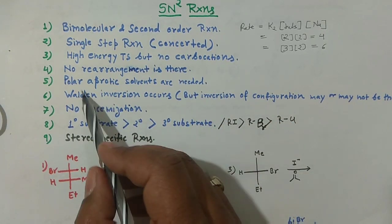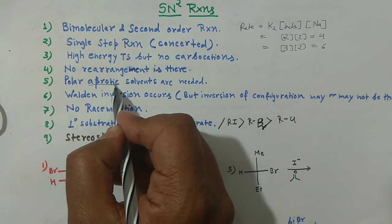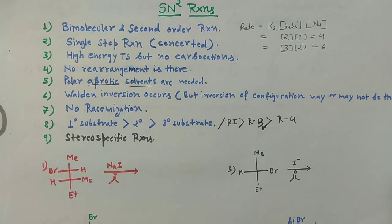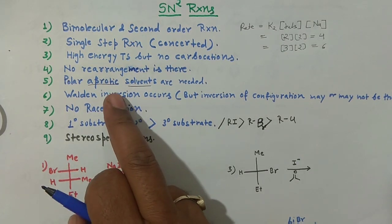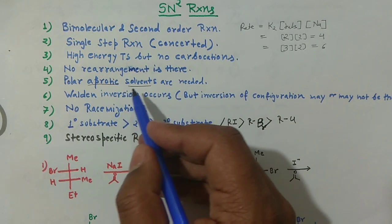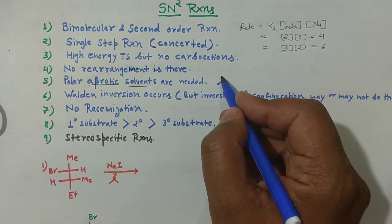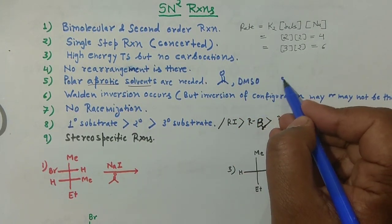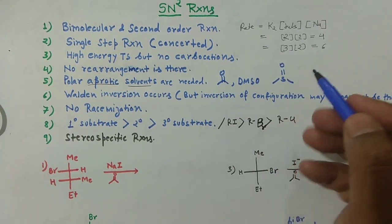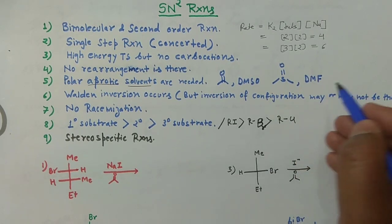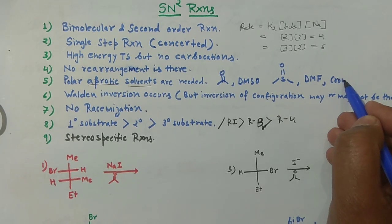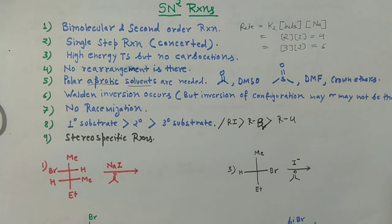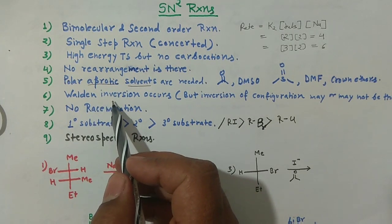Polar aprotic solvents are required for SN2 reactions. Polar aprotic solvents include acetone, DMSO (dimethyl sulfoxide), DMF (dimethyl formamide), and crown ethers. Crown ethers are also very important solvents in SN2 reactions.